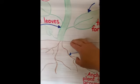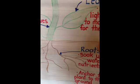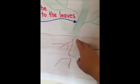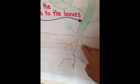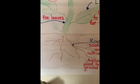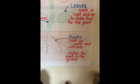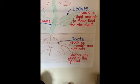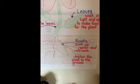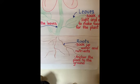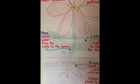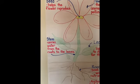Down below the soil surface we have our roots. The job of the roots is to soak up water and nutrients and to anchor or to hold that plant to the ground so that it doesn't blow away.